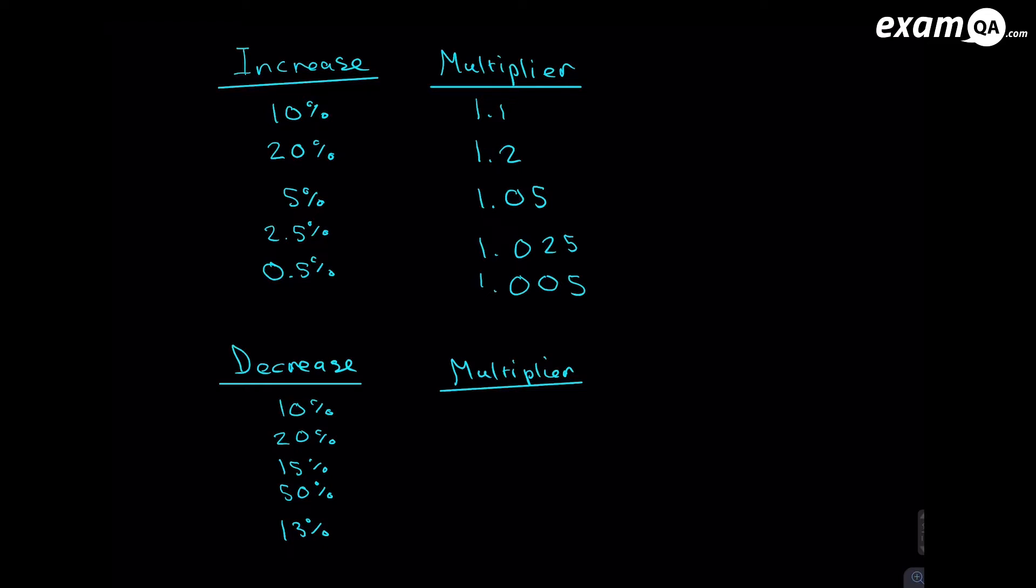Now let's look at decreases. And this happens in our example of depreciation. And of course it could also happen if you're reducing the price in a sale and many other contexts. So reduce by 10%, you times it by 0.9. 20%, 0.8. 15%, hopefully you gain the pattern, 0.85. 50%, give a moment to think about it. And you should have said 0.5. And a slightly tricky one, 13% reduction. And you should have said 0.87. So you need to know these multipliers for this topic.